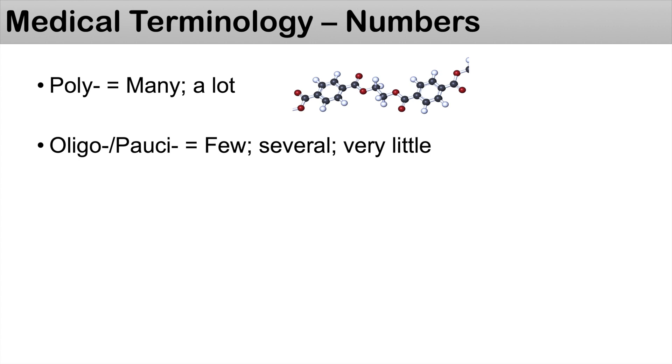Posse, you can think of a paucity of something, so very little of something. Other words that denote quantity include pan or omni. These denote all. So pancytopenia, all cells are in low amounts.